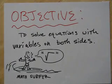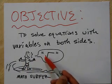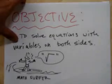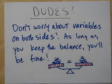Check out the math surfer. Look what he's saying. Radical. Get it? It's a radical. All right, whatever. Now we're switching to equations with variables on both sides. But listen here, dudes. Don't worry about variables on both sides. As long as you keep the balance, you'll be fine.